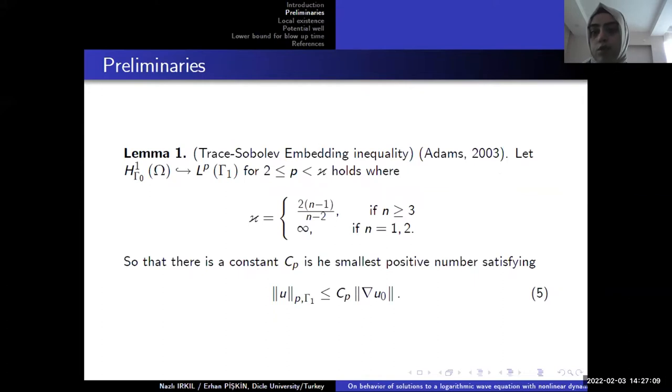The lemma is about the Sobolev embedding inequality. We firstly give some conditions and our aim is to show that the norm of H1 gamma-1 can be embedded to gamma-0. And we give this inequality in equation 5.